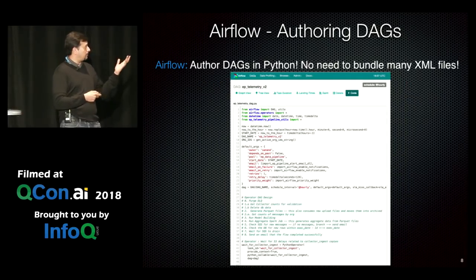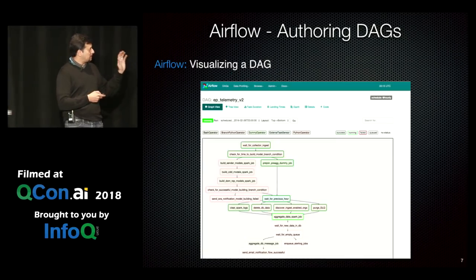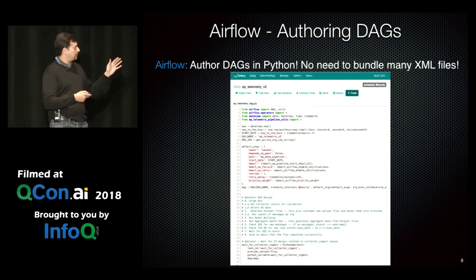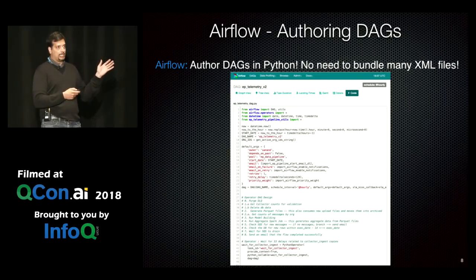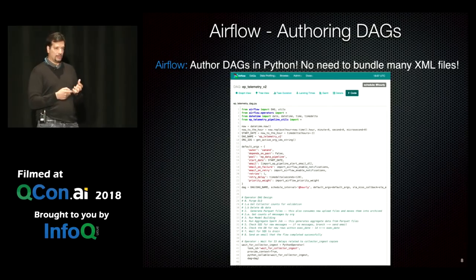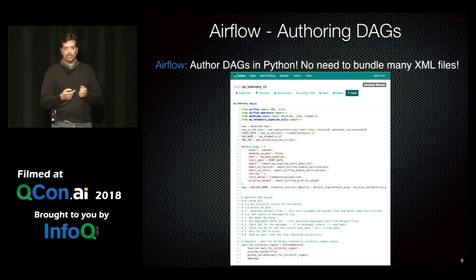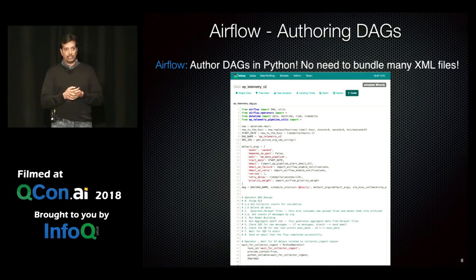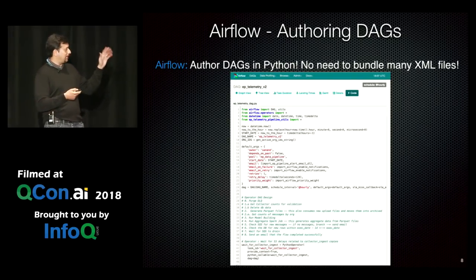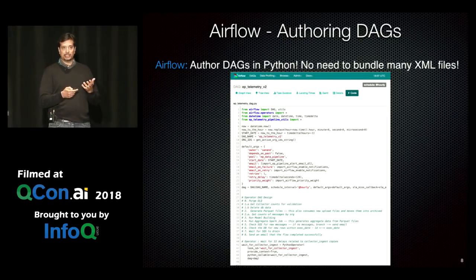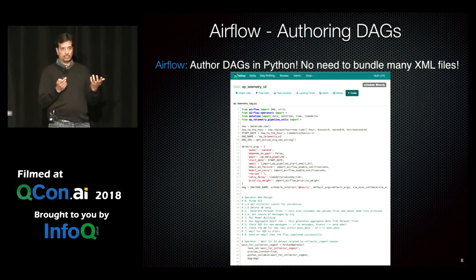Another view is the code view. This DAG is actually represented in simple Python code. What differentiates Airflow from, say, Oozie or Azkaban — which are also workflow schedulers — is that those require XML definitions, or in Azkaban's case you have to zip a directory of files that mimics the layout of your DAG. It's very cumbersome when making structural changes to your DAG.